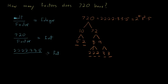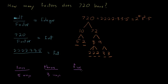Let's organize our thinking. The total number of ways to deal with the 2s: it could be zero through four, which is five ways. The number of ways to deal with the 3s: zero, one, or two — that's three ways. And the number of ways to deal with the 5: either no fives or one five — so that's two ways.